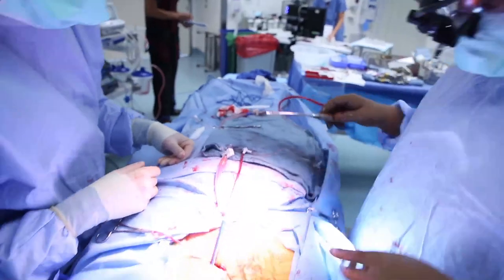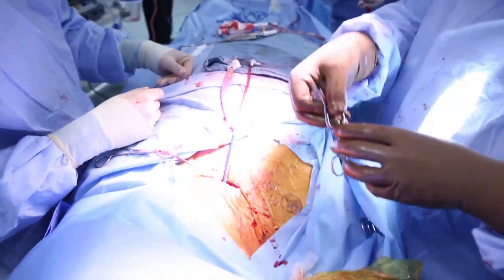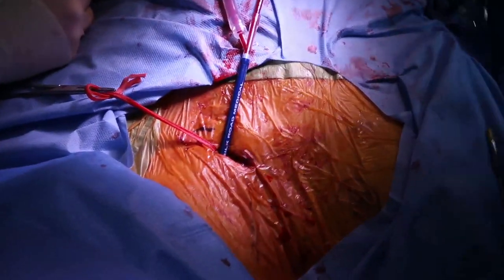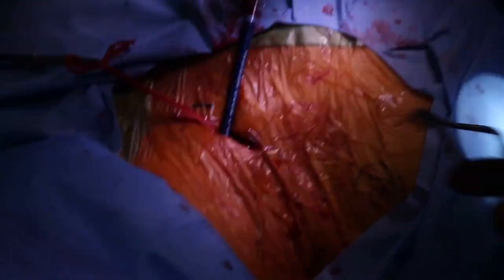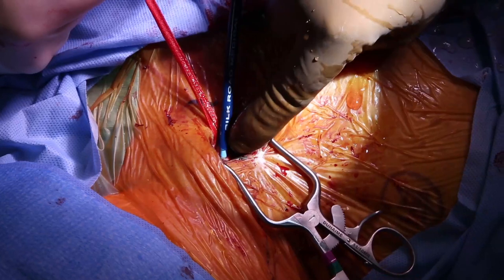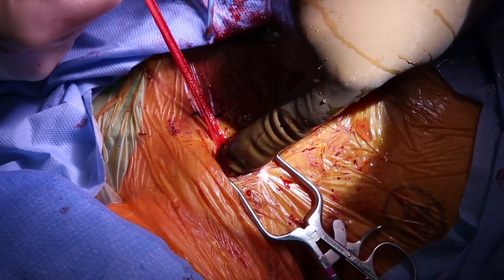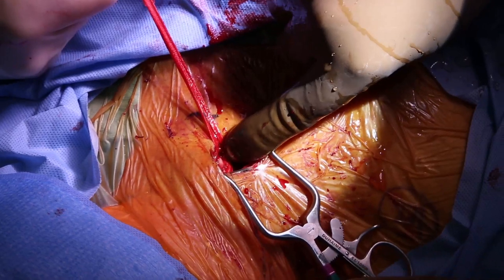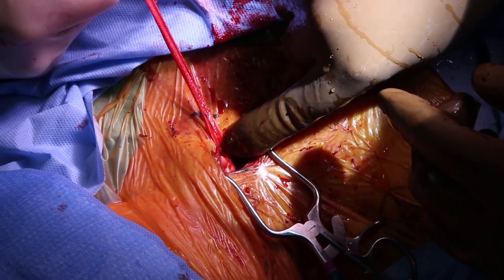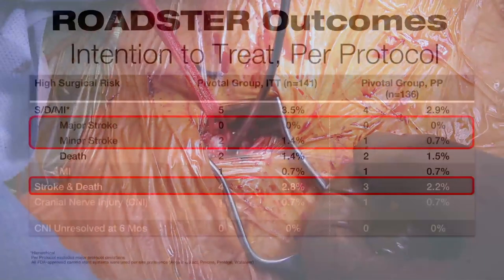The femoral venous sheath was removed and direct pressure was held. Direct visualization of the common carotid artery puncture site was obtained and removal of the arterial cannula was performed, with securing of the puncture site using the previously placed 5.0 prolene U-stitch. Hemostasis was confirmed and a 20 mg reversal protamine dose was given.